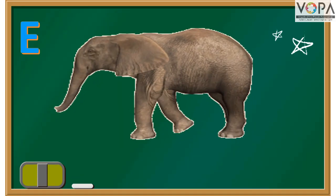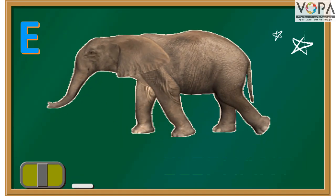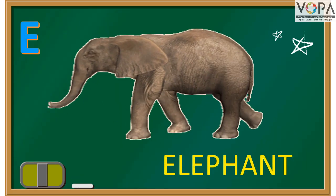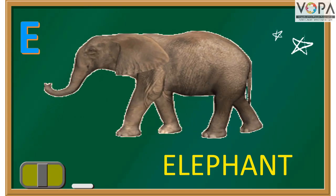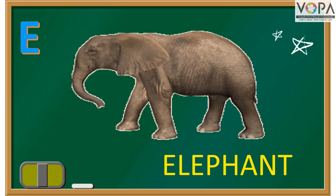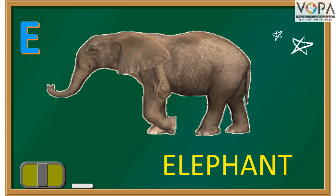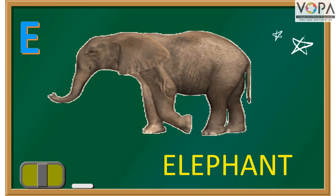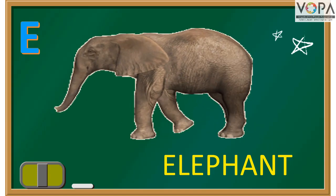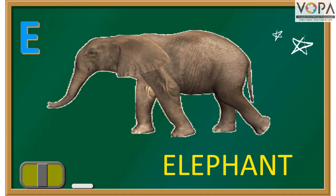E for Elephant. E, L, E, P, H, A, N, T. Elephant. Elephant is a part of T.